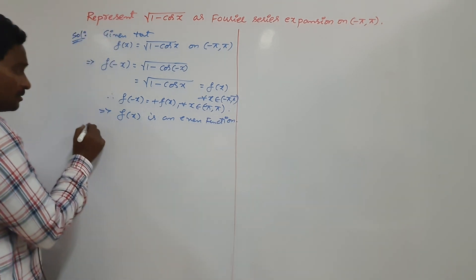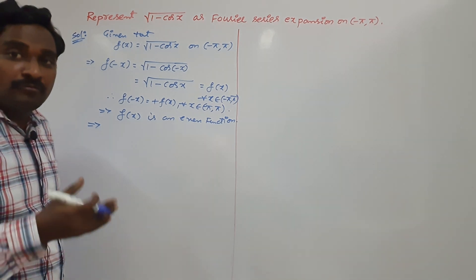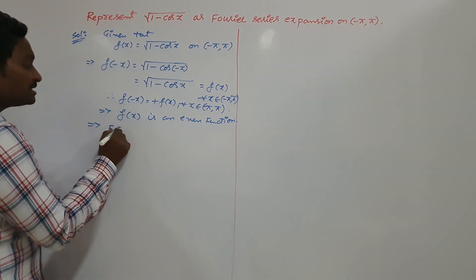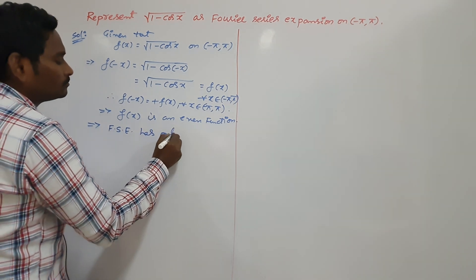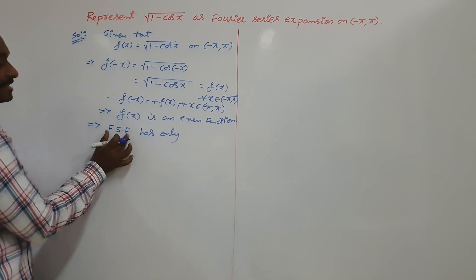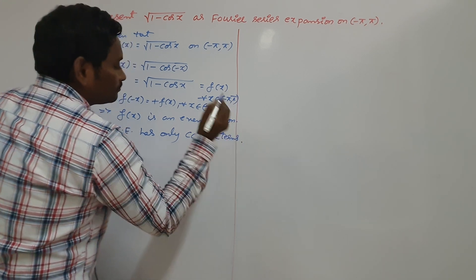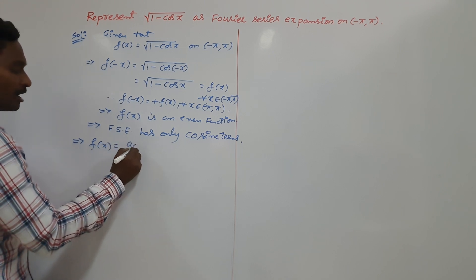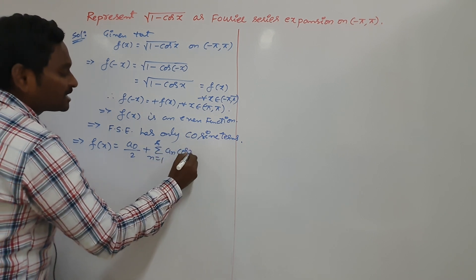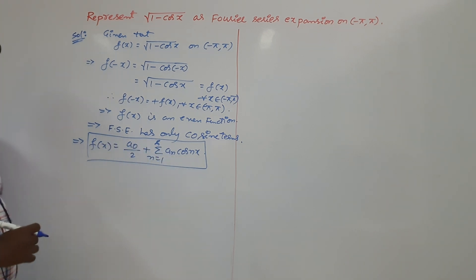Since it is an even function, it is not necessary to find the b n value — if you find it, it becomes 0. Just find out a naught and a n values; that is enough. The Fourier series expansion has only cosine terms. Do not write it differently in examinations — it has only cosine terms.